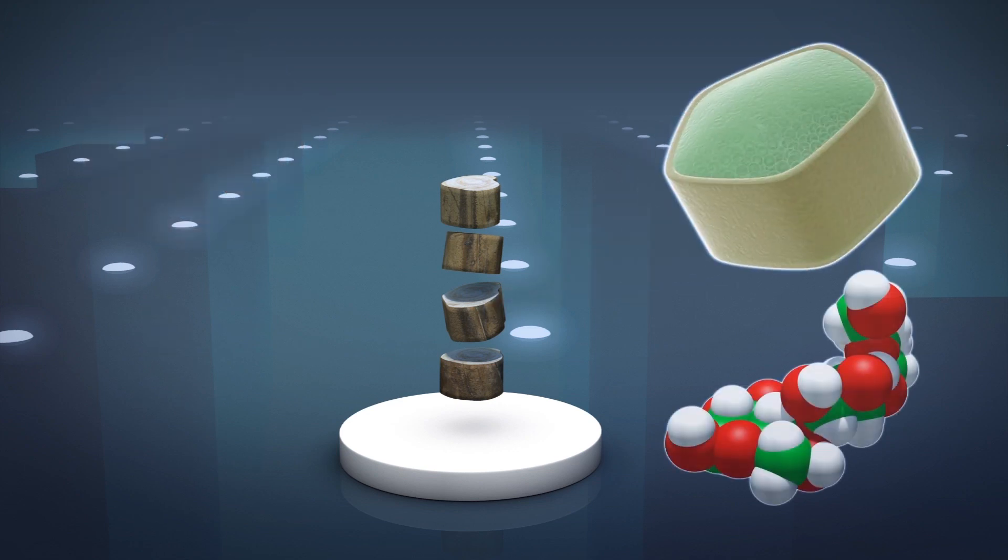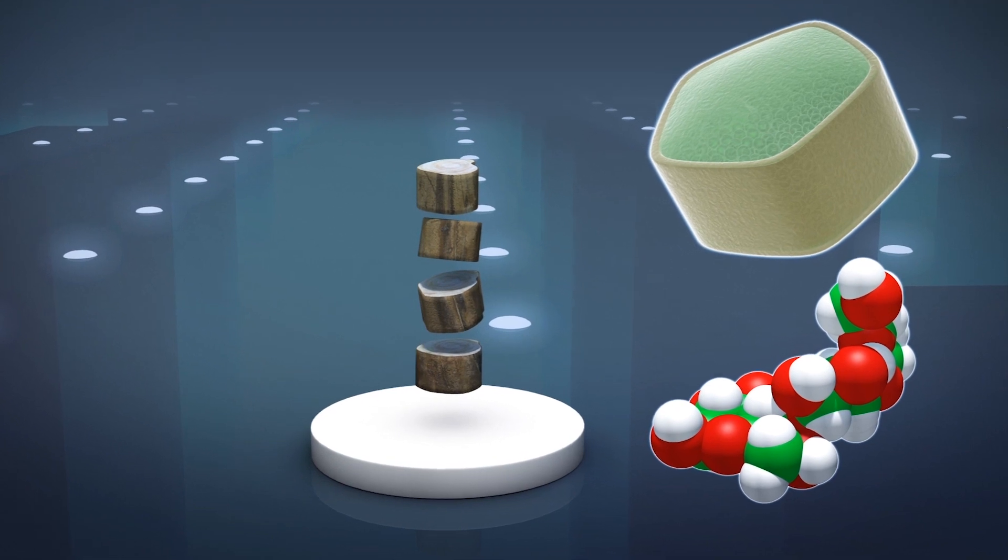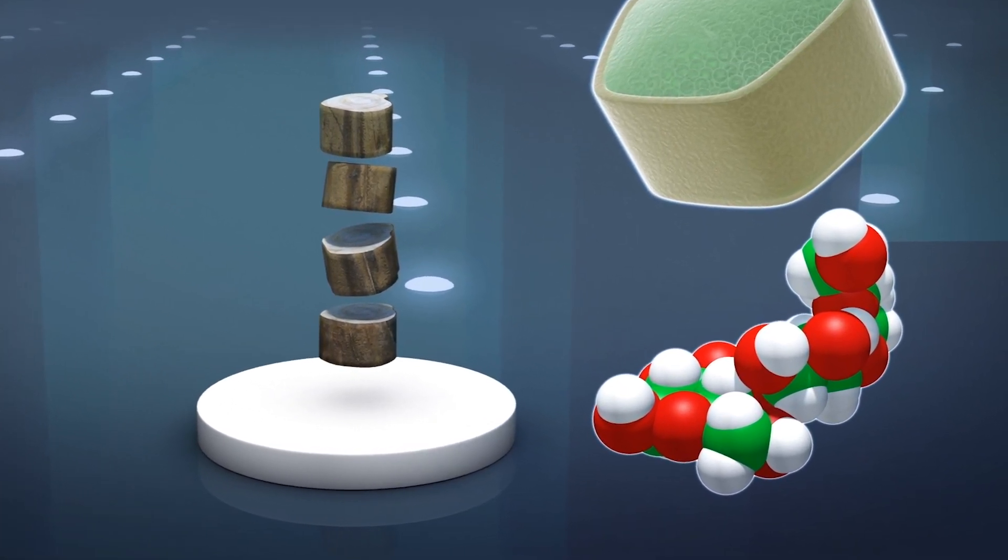The process extracts cellulose from banana plant cells in powdered form, which is then chemically treated to become the packaging material.